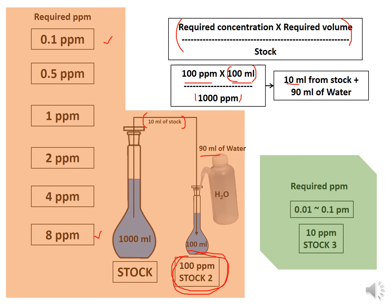If the required concentration is less than 1 ppm — for example, 0.01 to 0.1 ppm — it is recommended to prepare a stock of 10 ppm, which is the next level of stock. Based on the required concentration, you prepare the appropriate stock solution.